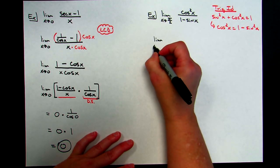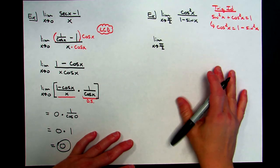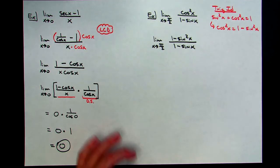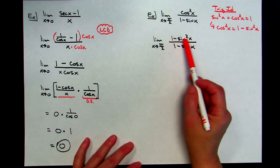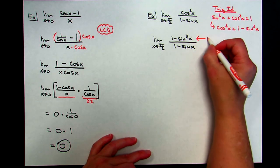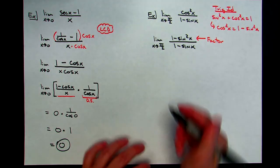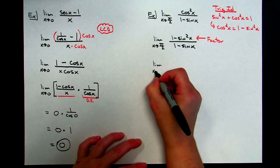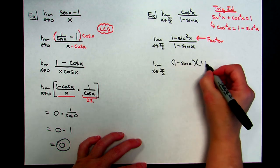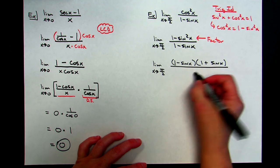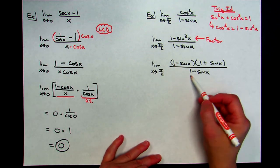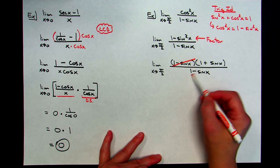So I'll have the limit as x approaches pi over 2 of (1 minus sine squared x) all over (1 minus sine x). Now looking at that numerator, hopefully you recognize this is the difference of two squares — I can factor it. That gives me the limit as x approaches pi over 2 of (1 minus sine x)(1 plus sine x) all over (1 minus sine x). This does help: I've got a quantity I can cancel. The (1 minus sine x) on top and bottom cross out.